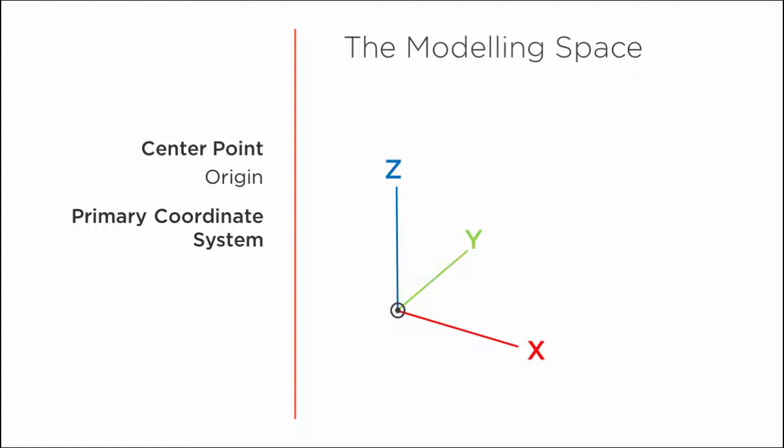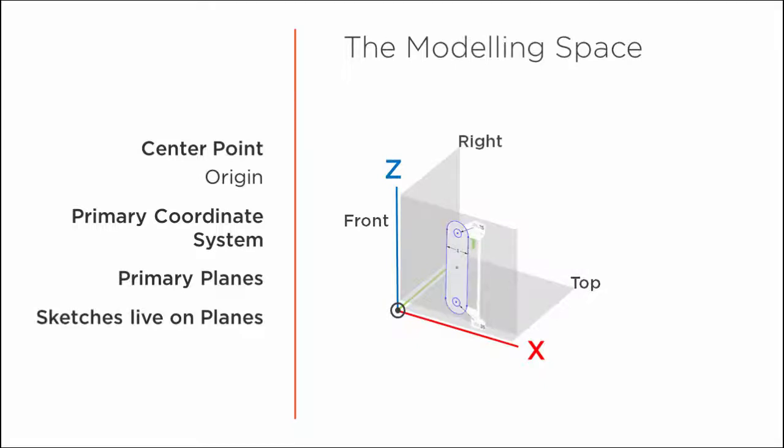In any case, attached to the primary coordinate systems are the default 3 primary planes called top, right and front plane. Before you can create a sketch you have to select a plane that will now hold all the geometry. However, you are not limited to the 3 default planes and every CAD system lets you define additional planes inside the modeling space which might be parallel to the default ones or can be placed in any orientation.